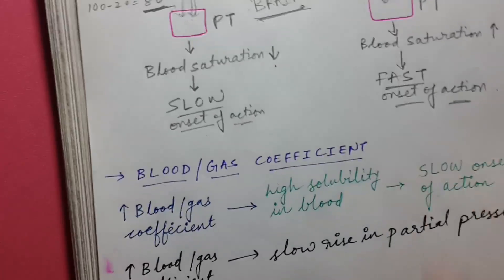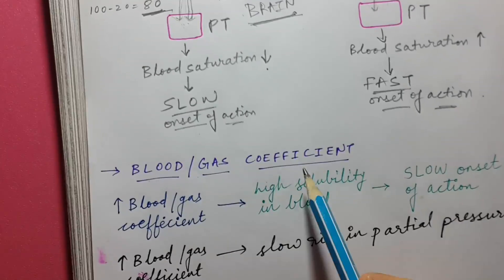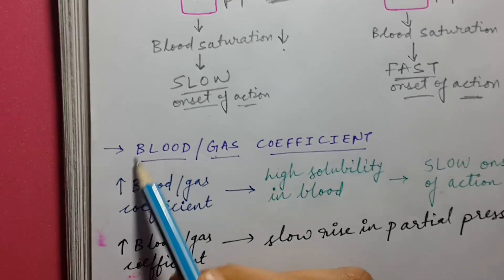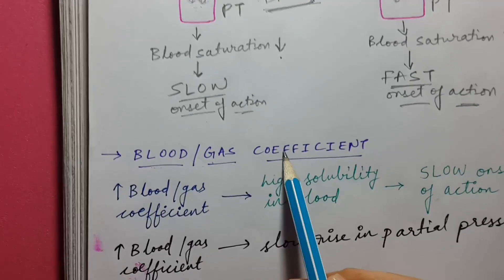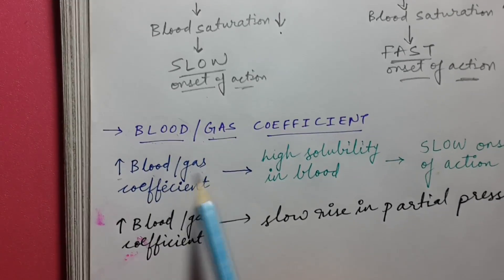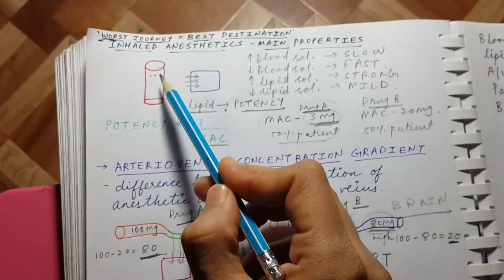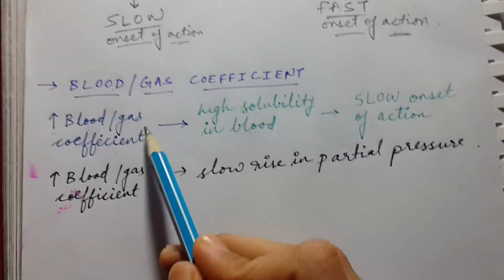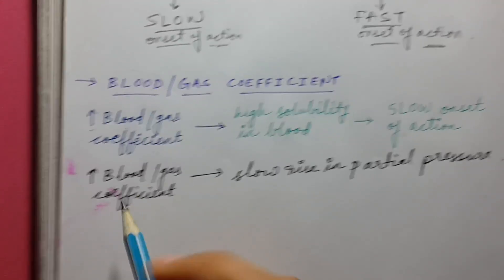The third property is the blood-gas coefficient. If the blood-gas coefficient is higher, it means the drug is more soluble in blood. If it is low, the drug is less soluble in blood. Increased blood-gas coefficient means high blood solubility, and as discussed, if the drug is highly soluble in the blood, the onset of action will be slow.